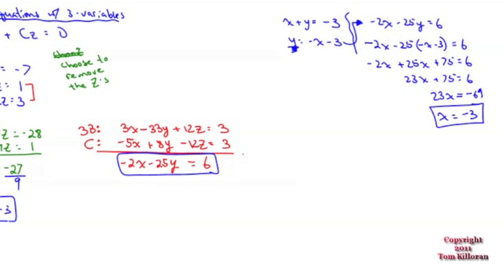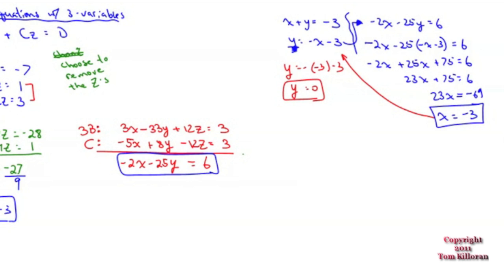But we're not done yet. Take x equals negative 3 and plug it back into y equals negative x minus 3. You get y equals negative times negative 3 minus 3, which is positive 3 minus 3 — so y equals 0. Now I have two answers: x equals negative 3, y equals 0. How do I find the third? Go back to the original equations.